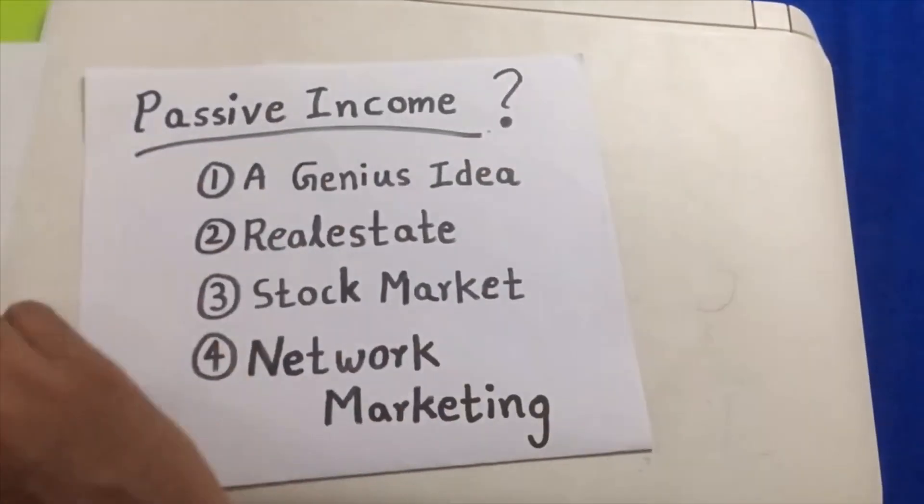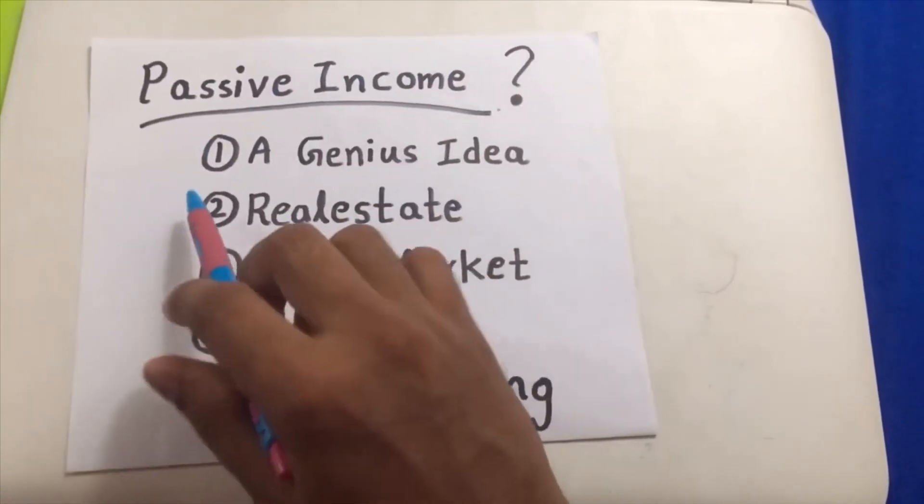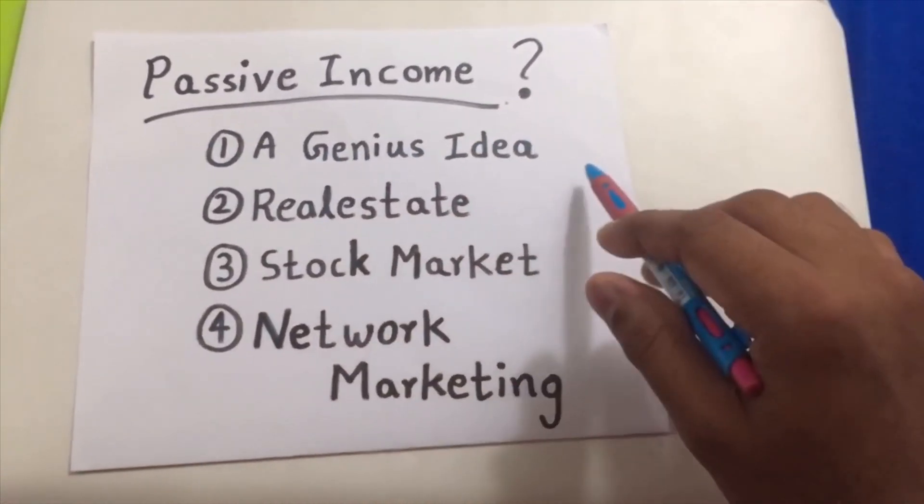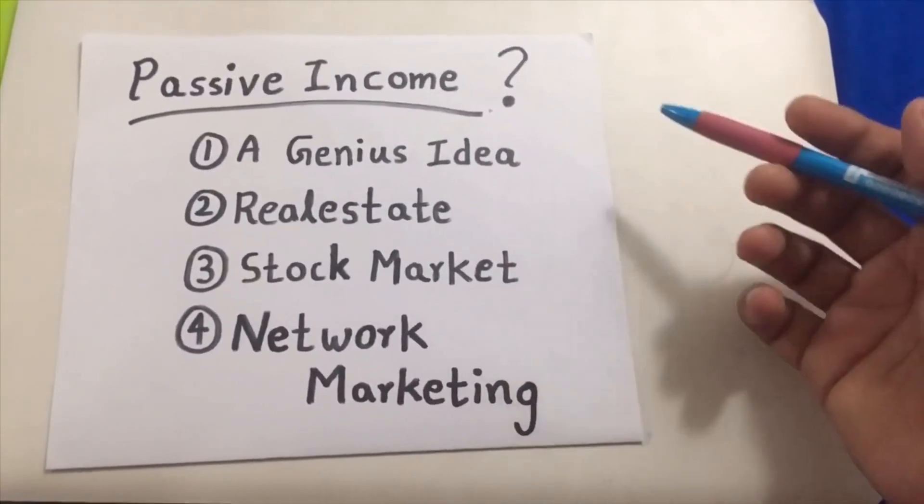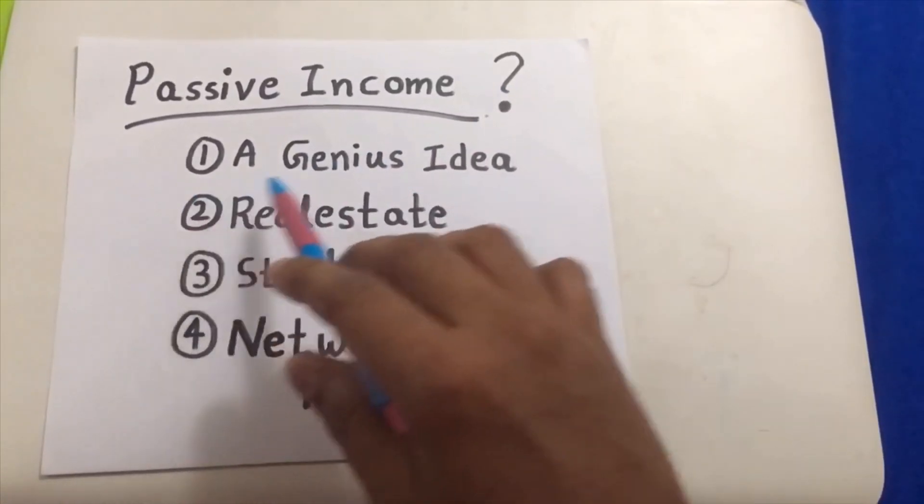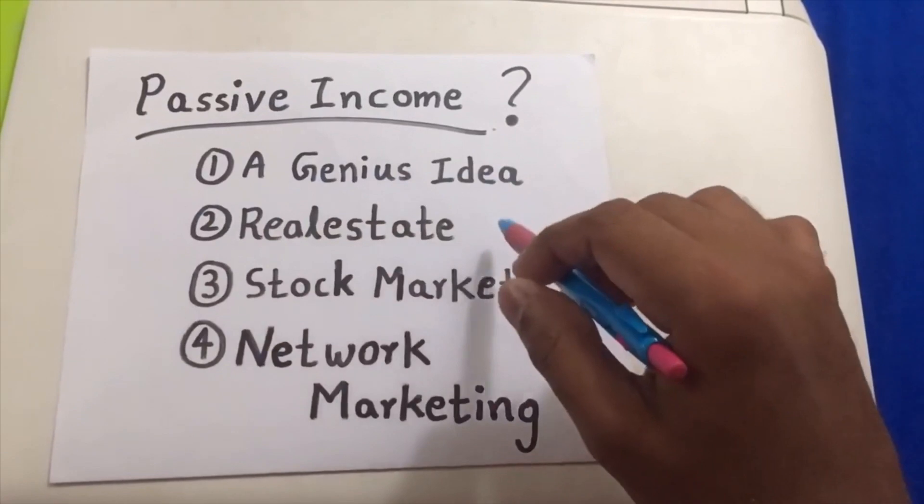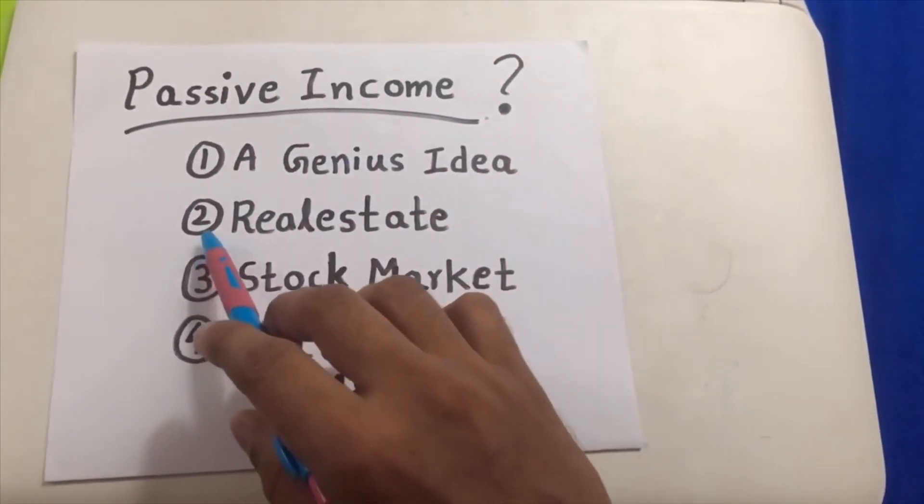There are four ways where you can earn a passive income. Number one is by having a genius idea. It's like being the owner of Facebook, Google, Apple, or Samsung. The chances of having a genius idea is very rare, so we cannot do this.